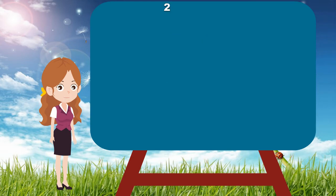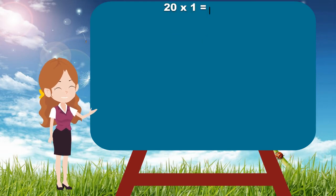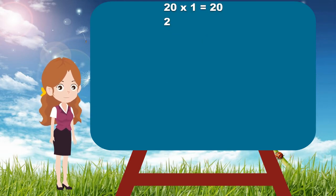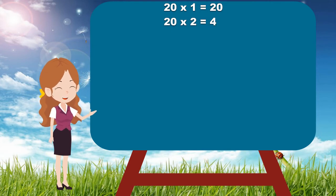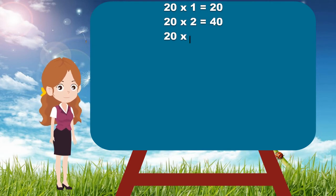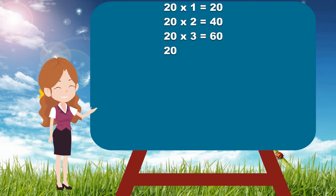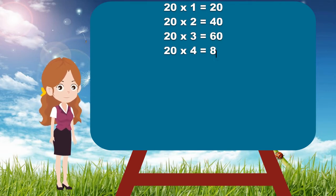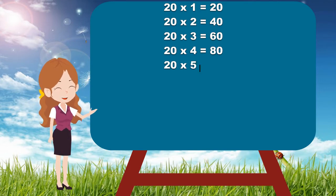20×1 is 20. 20×2 is 40. 20×3 is 60. 20×4 is 80. 20×5 is 100.